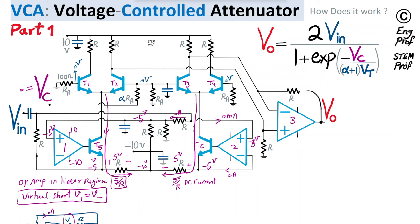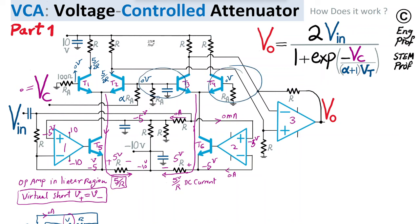With matched transistors and 0V at both bases of the differential pair, the circuit is symmetric. Half the bias current — 5/(2R) — flows through the collector of T2 and half through the other branch. The same applies to the second differential BJT pair: 5/(2R) flows through the collector of T4 and 5/(2R) through the other branch.